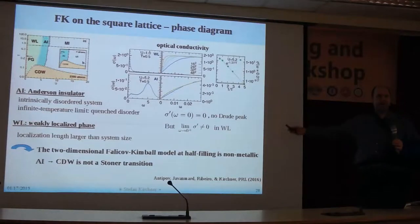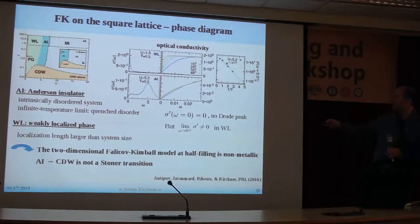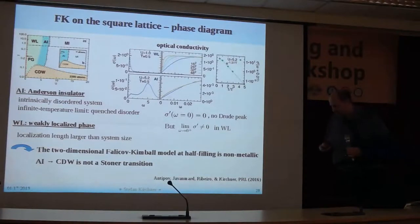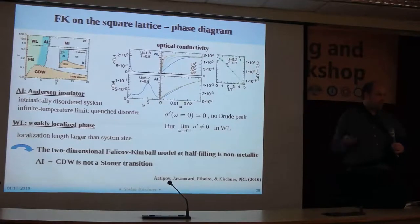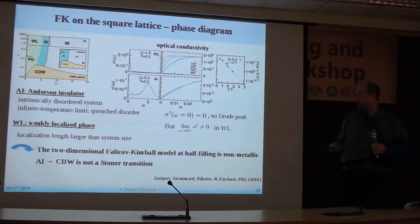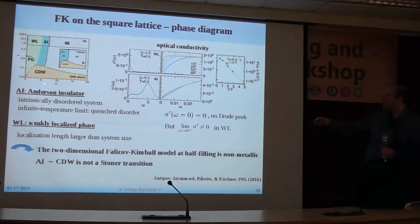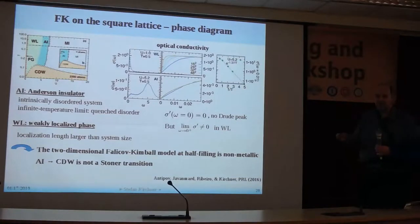We can also calculate the optical conductivity. We find that neither in the AI phase — which we identify as an insulator from the IPR and density of states — nor in the WL phase do we have a Drude peak. But from the system-size scaling of the real part of the optical conductivity, we conclude that the WL phase, which appears metallic, is where we have weak localization — the localization length is larger than the system size and therefore it appears metallic. As you take the system size to infinity, you eventually cross over into the region where everything is given by an Anderson insulator. To summarize this part: in the two-dimensional Falikov-Kimbell model at half-filling on the square lattice, nothing is metallic — it's all insulating. You have an Anderson insulator and a Mott insulator. This also implies the transition at small U into the charge density wave is not a Stoner transition.